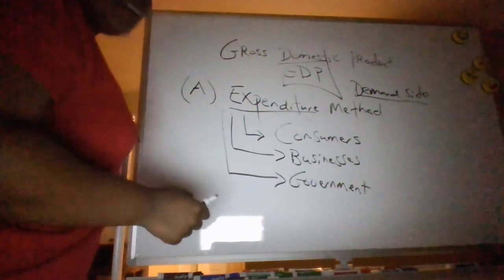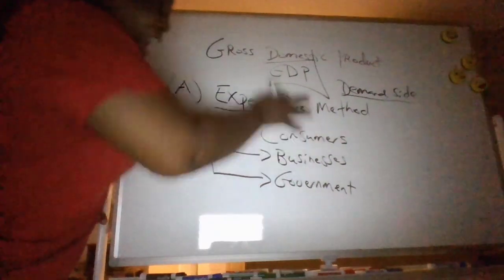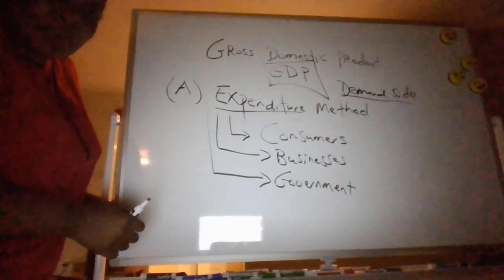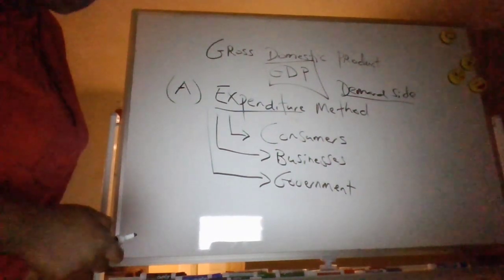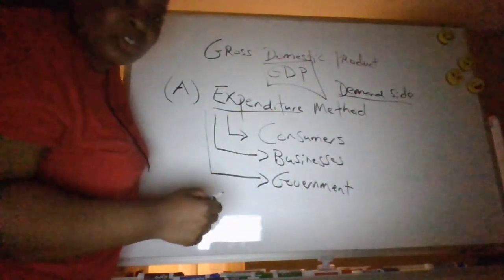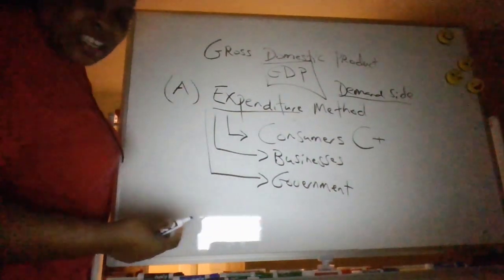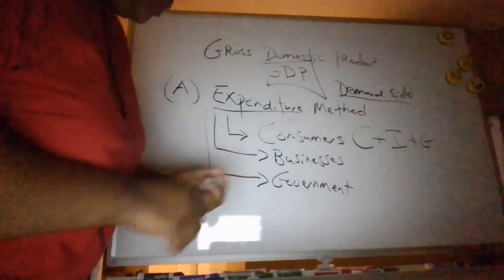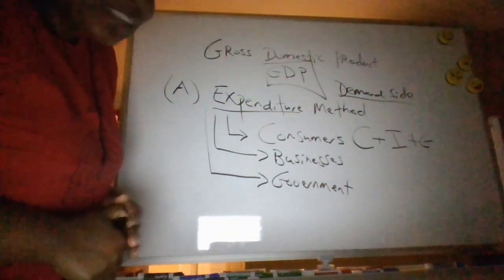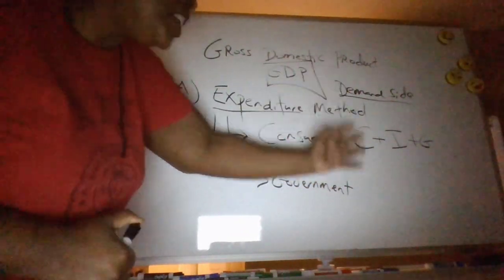At the end of the day, we aggregate everything these final users do. So the expenditure method gives us a nice, neat equation. The final users — put them together. It's the consumers, that's where we get the C from. It's the businesses — they're investors, that's what we call them in Econ — that's where we get the I from. One of the final users is the government, that's where we get the G from. Final users are consumers, businesses, and the government. But we've got to fix this up a bit.